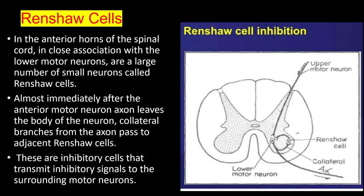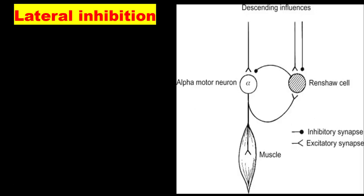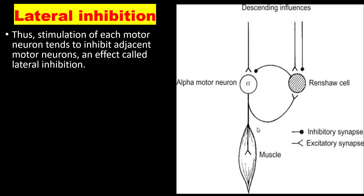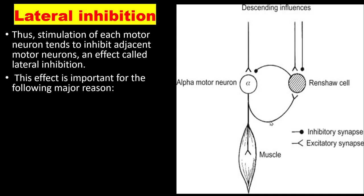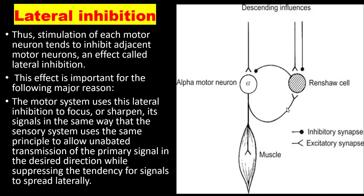The action potential produced in the stimulated neuron remains intact and stimulates the target organ without interference from other neurons. Stimulation of each motor neuron tends to inhibit adjacent motor neurons — this effect is called lateral inhibition. The motor system uses lateral inhibition to focus or sharpen its signal, in the same way the sensory system allows unimpeded transmission of the primary signal while suppressing lateral spread.